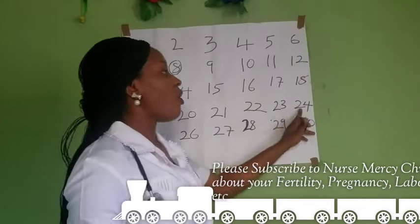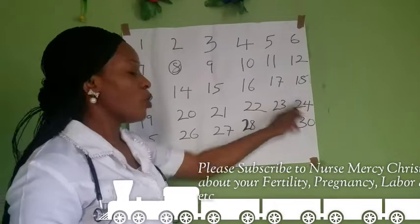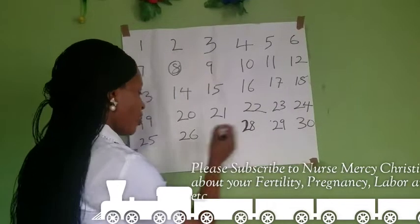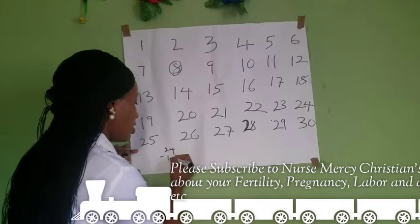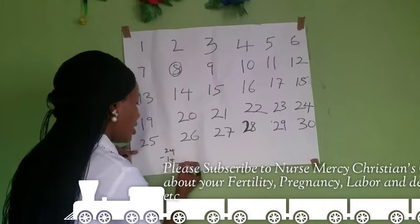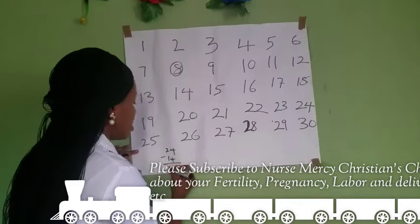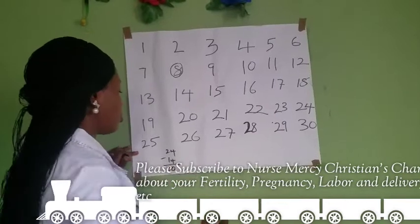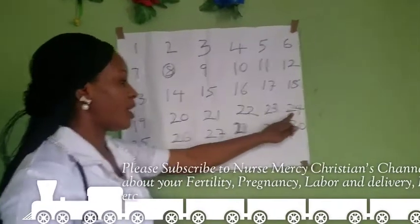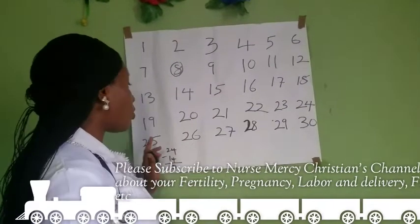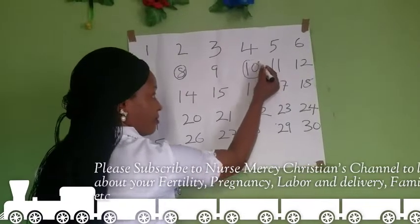If you have a 24-day menstrual cycle, subtracting 14 from 24 gives you 10. So if you have a 24-day menstrual cycle, your ovulation takes place on day 10.